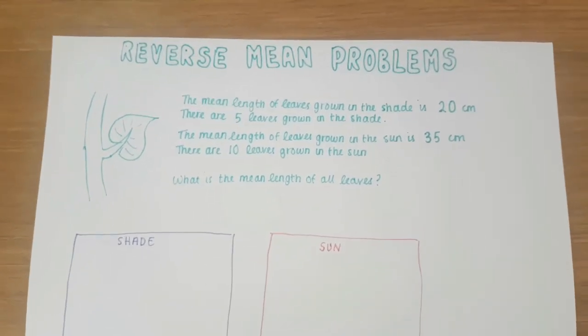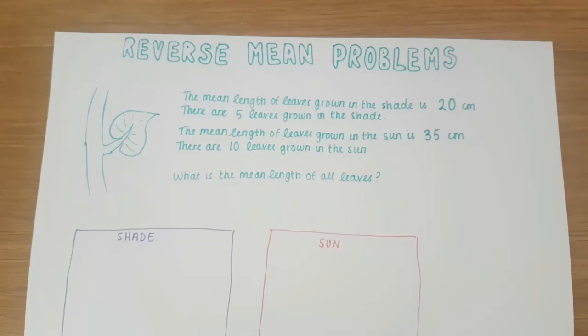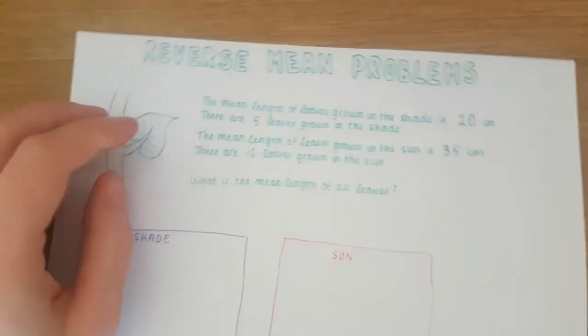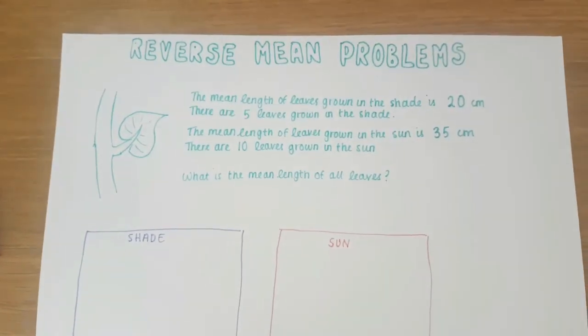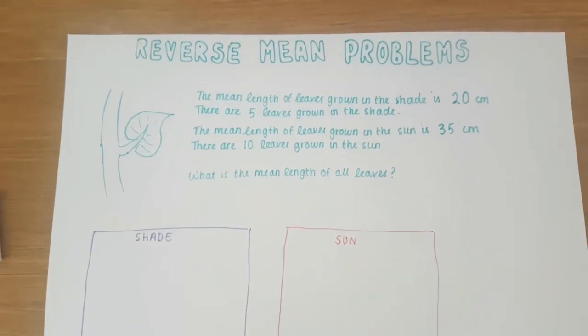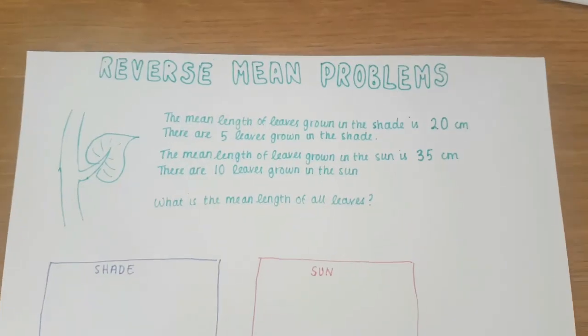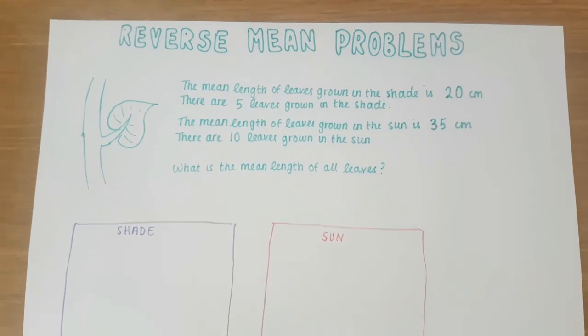In this problem we're given length of leaves in the sun and in the shade. We're given information about the mean length of the leaves in the shade and the mean length of the leaves in the sun and how many leaves are in each category. What we want to know is what the mean length of all the leaves are.